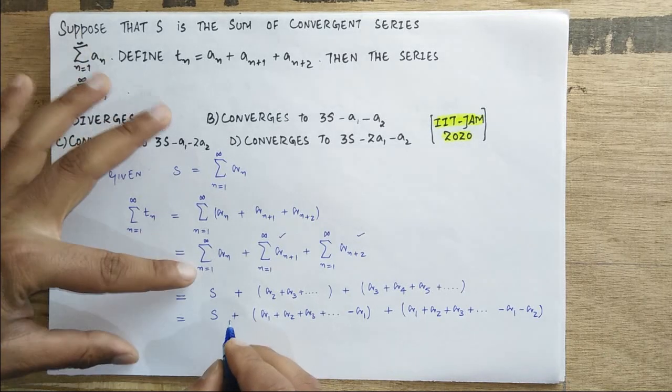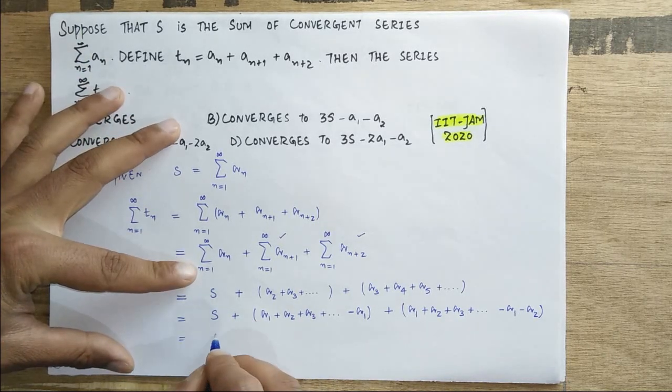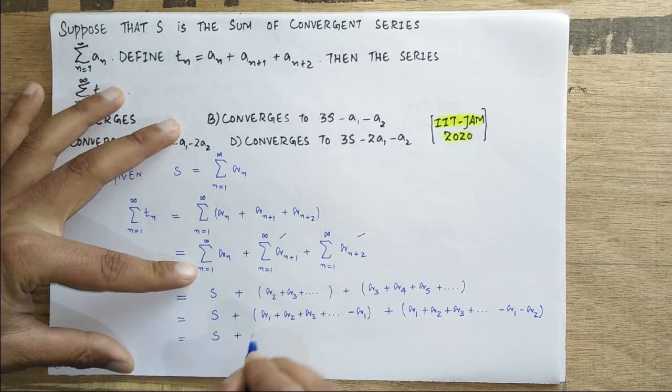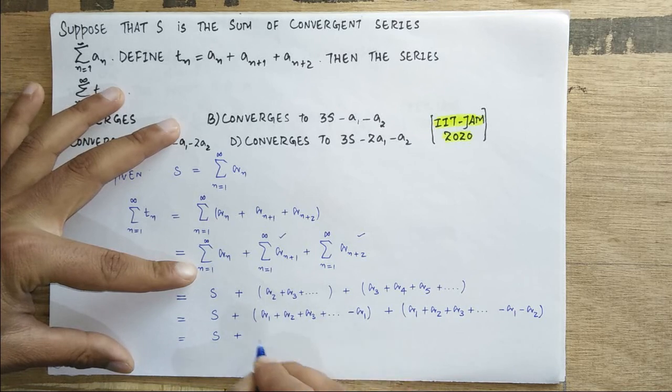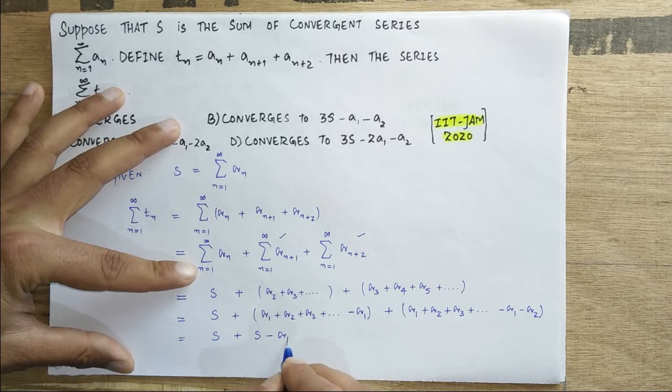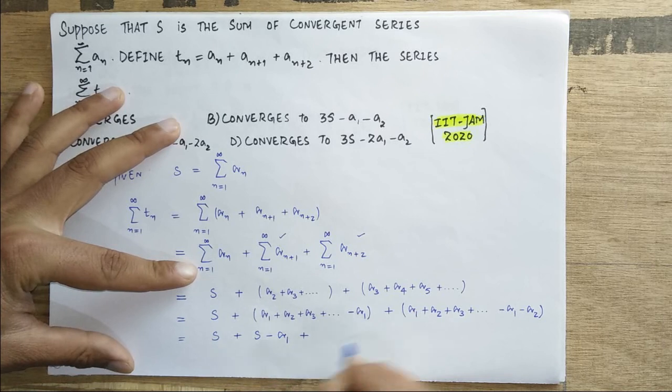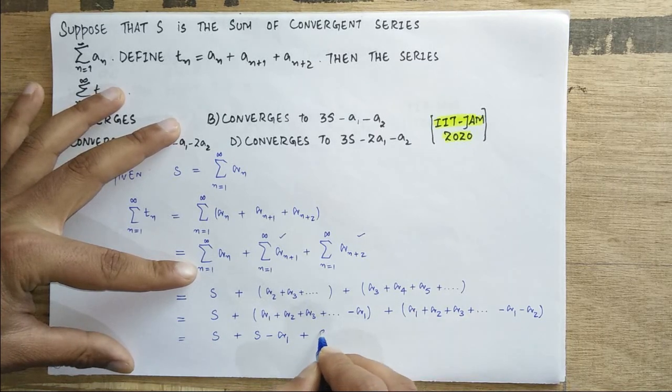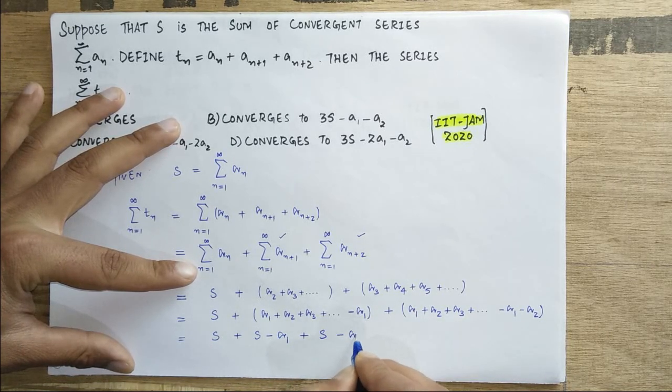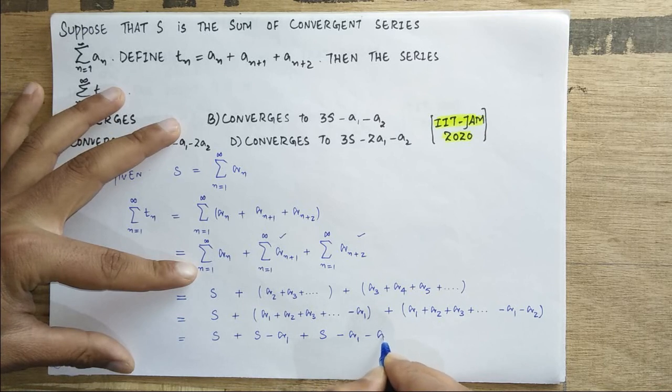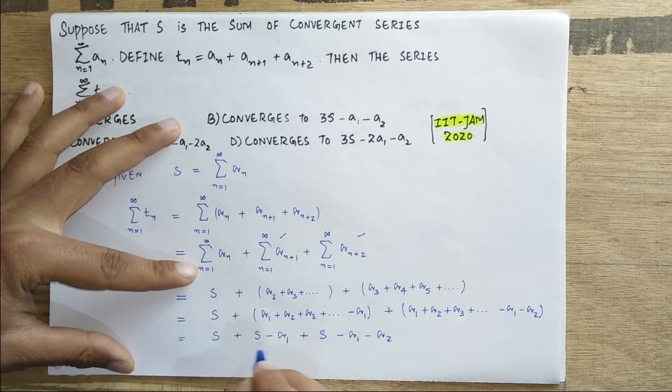So if you can see here, this is S plus, here infinity, that is S again. A_1 plus here the term is S, then minus a_1 minus a_2. S plus S plus S, that is 3 times S. Negative a_1, negative a_1, that is 2 times a_1, and then a_2.